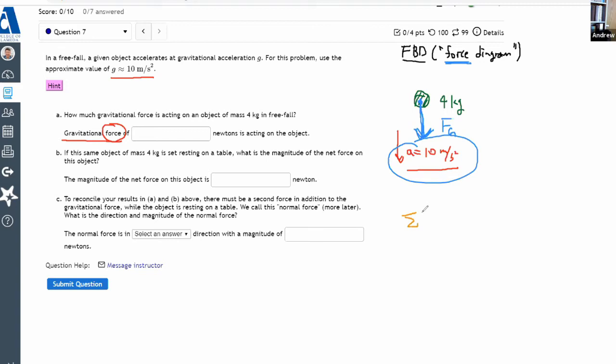Newton's second law says this, that net force is equal to mass times acceleration. Here, the net force is super simple. Your gravitational force, that is the net force. Because that's the only force, that's the total of your force. So to figure out this net force, all you need is mass and acceleration. So you have mass 4 kilograms, you have acceleration 10 meters per second squared.